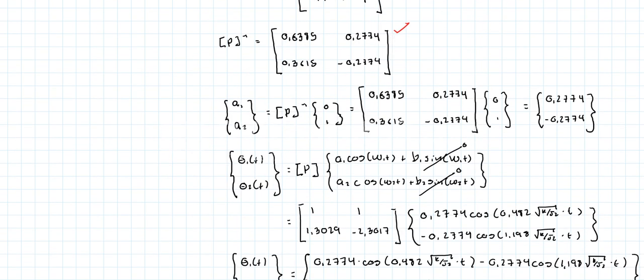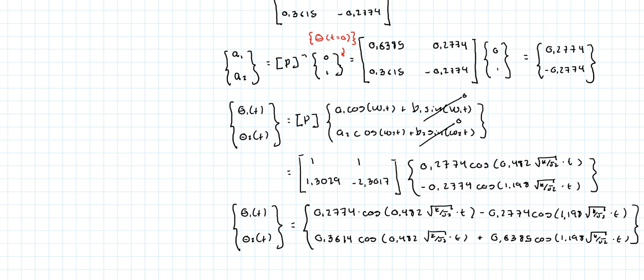Alright. Now, we already calculated the inverse of the P matrix. So, from there, it's pretty easy to find the A sub 1 and A sub 2 constants. We take the inverse of the P matrix, and we multiply it by the initial displacement vector. And so, this right here is the displacements when T equals 0. One of them is equal to 0, and the second one is equal to 1. And that gives us A sub 1 and A sub 2. Great.